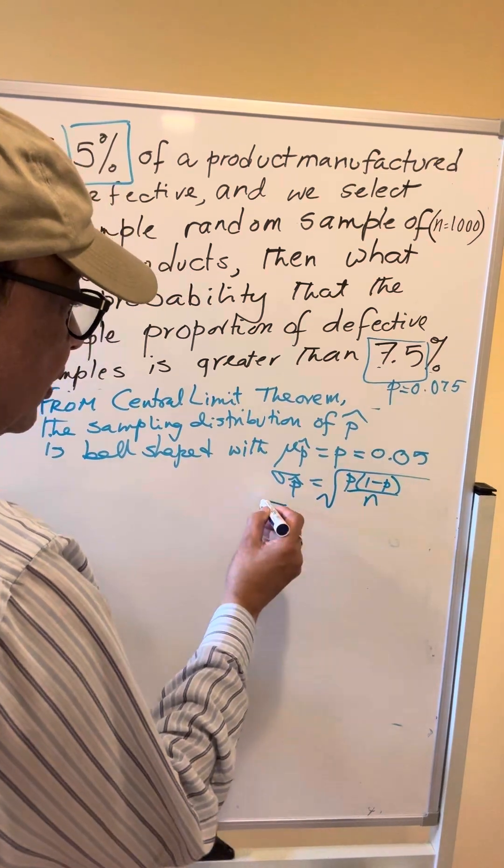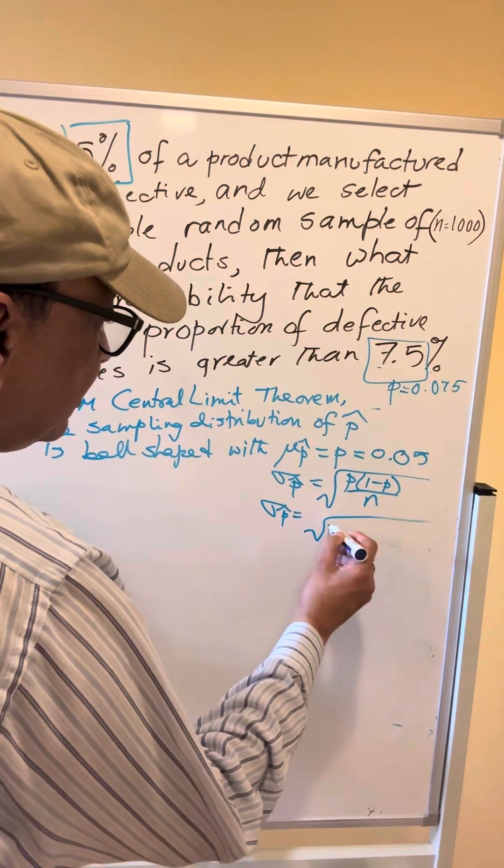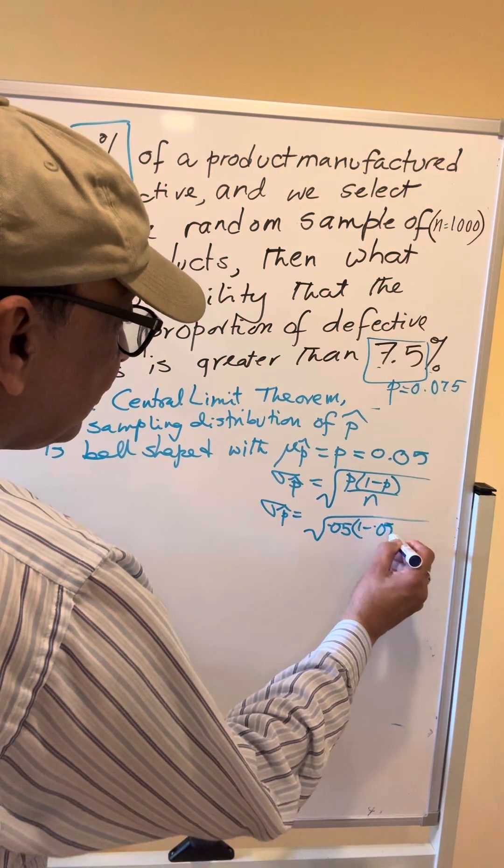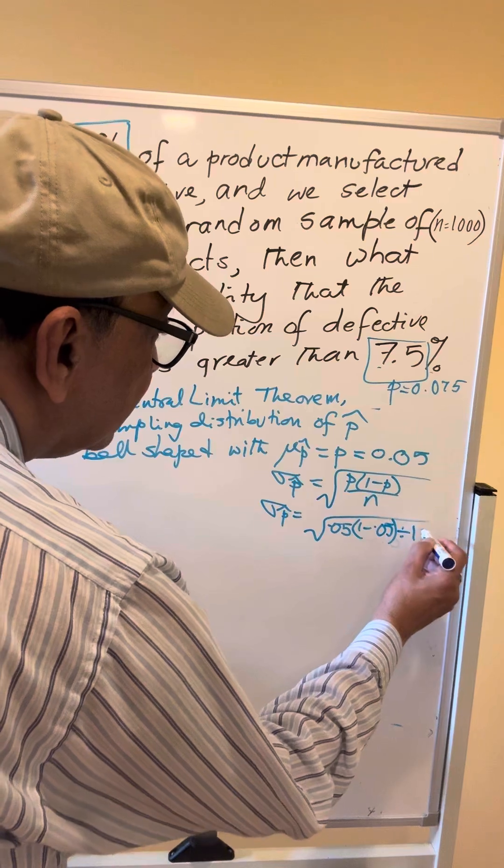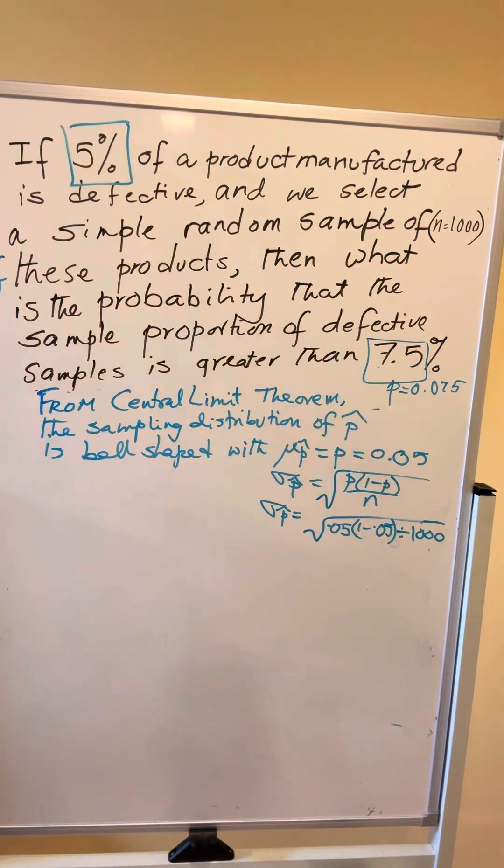Okay, so in our case it will be sigma P-hat. We will of course use our calculator, 0.05 times 1 minus 0.05 divided by, remember it is 1000 in the sample size.